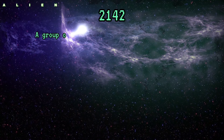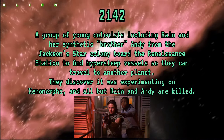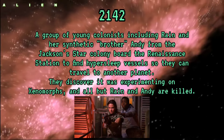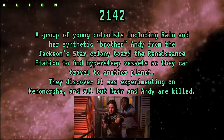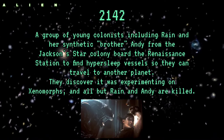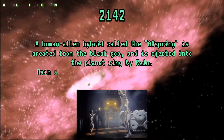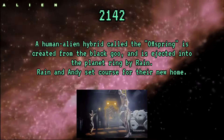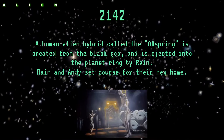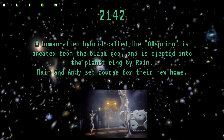2142: A group of young colonists, including Rain and her synthetic brother Andy from the Jackson's Star mining colony, board the Renaissance Station to find hypersleep vessels so they can travel to another planet. They discover it was experimenting on xenomorphs, and all but Rain and Andy are killed. A human-alien hybrid called the Offspring is created from the black goo and is ejected into the planet's ring by Rain. Rain and Andy then set course for their new home.